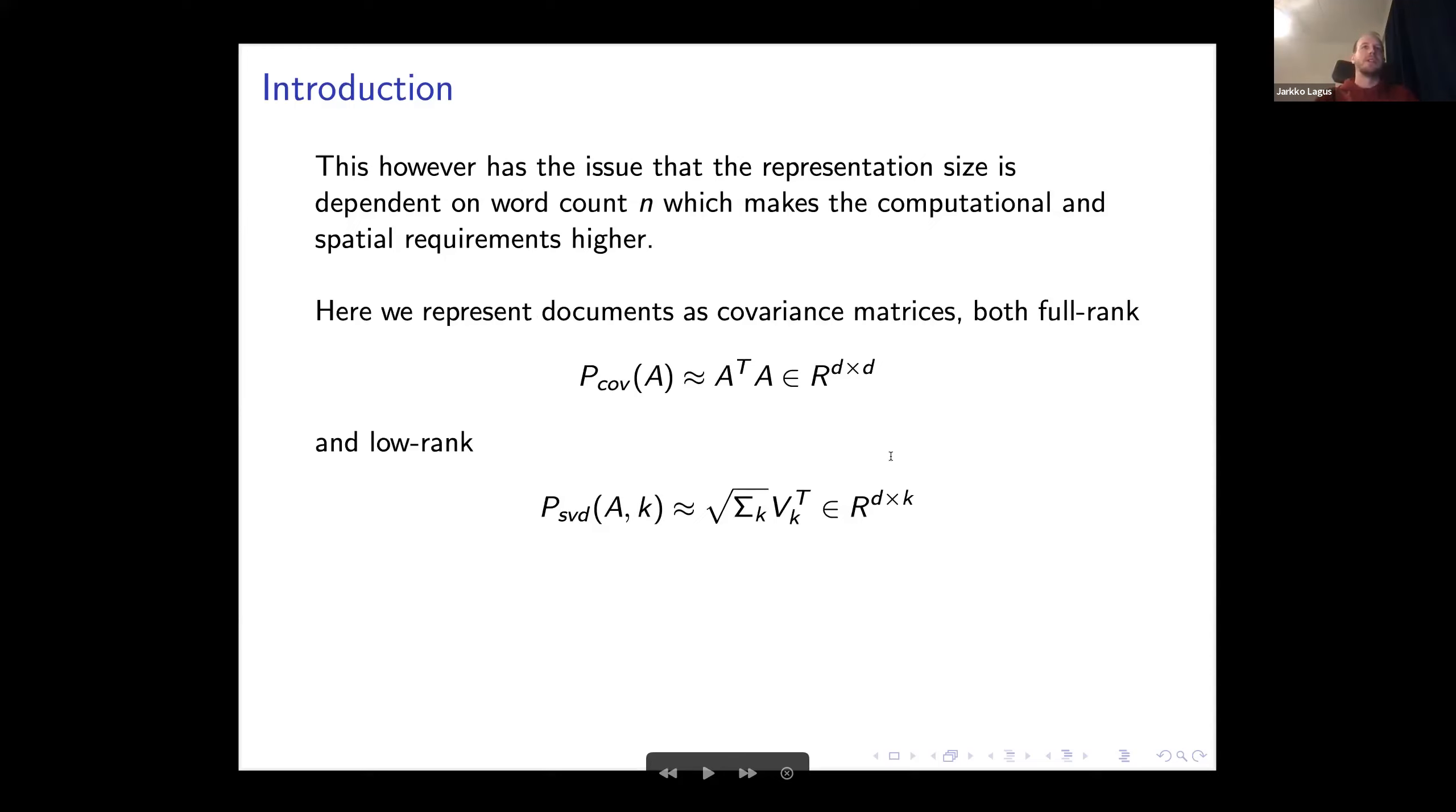To alleviate this issue, we represent the documents as covariance matrices, both full rank, which is just the document representation times its transpose, and then we develop this low rank version of it, where we take some kind of matrix factorization or dimensionality reduction method and drop the dimensionality for the covariance matrix.